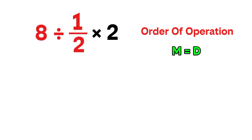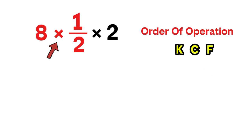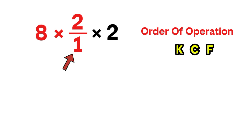Dividing by a fraction can be a little confusing, so we'll use the KCF rule, which stands for keep, change, and flip. We keep the first number — that's 8. We change the division sign to multiplication, and we flip the fraction. So 1 over 2 becomes 2 over 1. Now our expression becomes 8 times 2 over 1, and that simply equals 16.